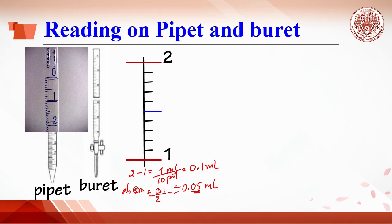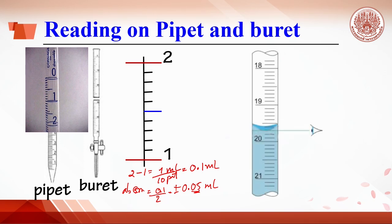It is important to make sure your eyes are at the same level as the meniscus to obtain an accurate reading. A lower or higher eye position will result in reading errors.